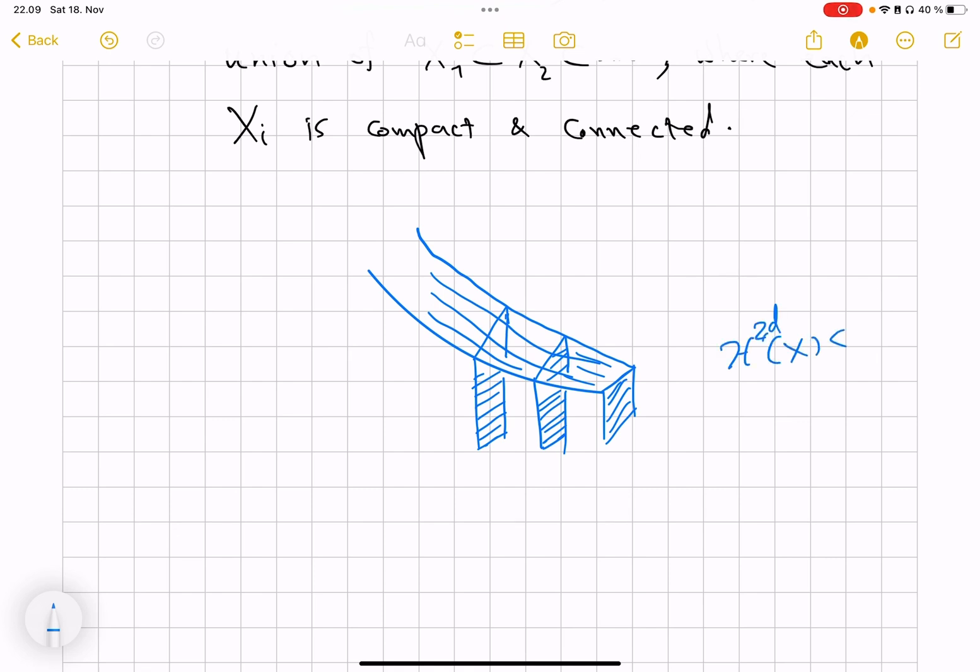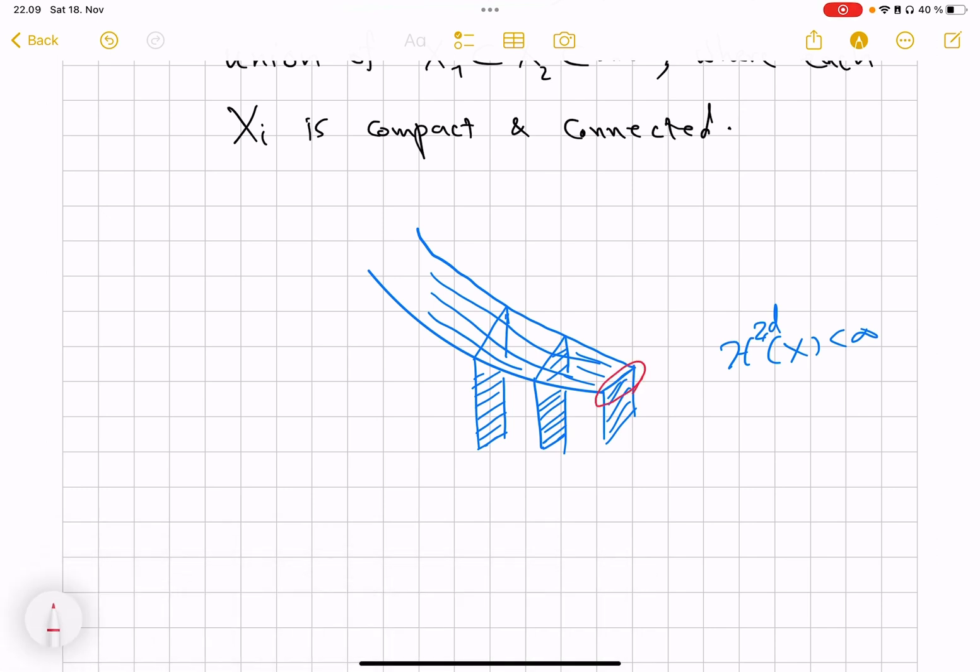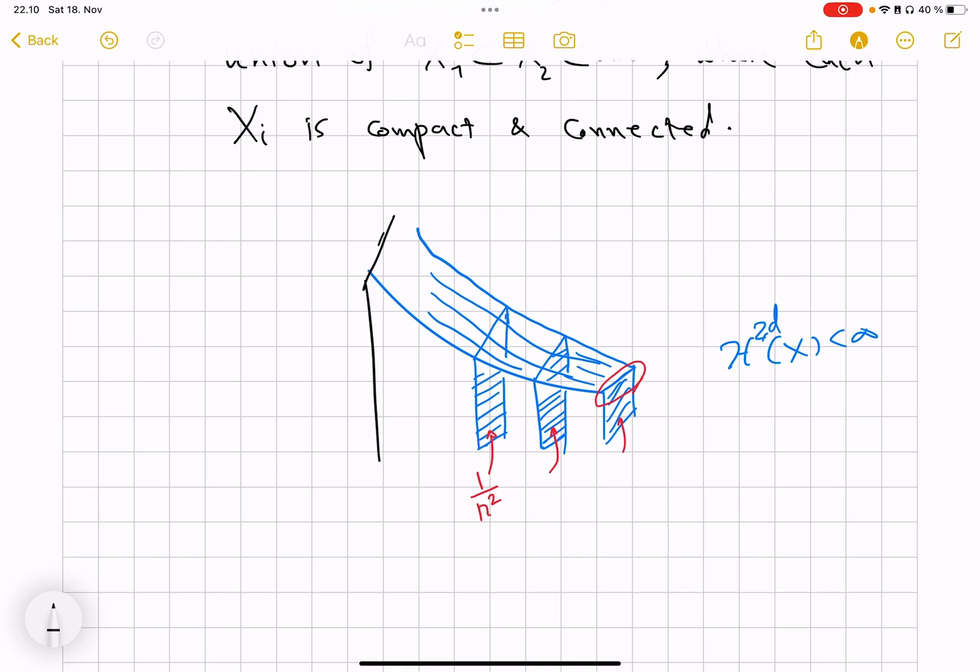Now either you start with guessing that okay I can turn this into a version under a homeomorphism into one with H^2 of X finite, so the one path of doing it is okay you change your metric near here and you kind of pinch these walls so that each wall successively ends up having less and less volume, so let's say each wall ends up having a volume of 1 over N squared, so their summation will be finite, but then you run into this issue of the last wall.